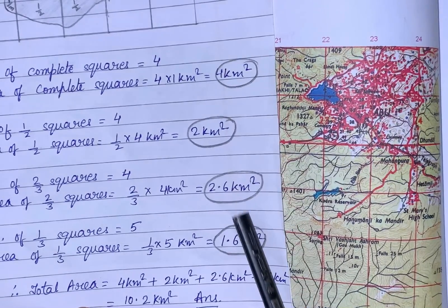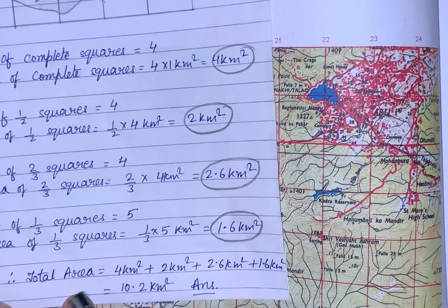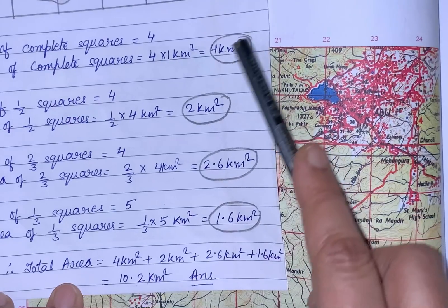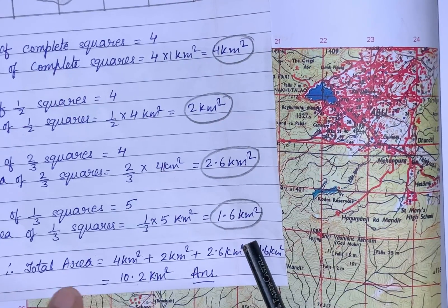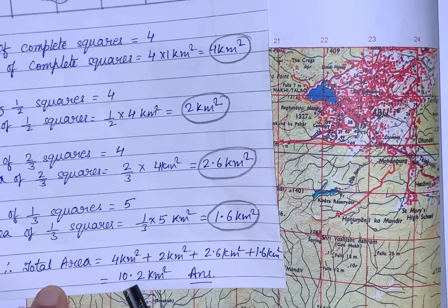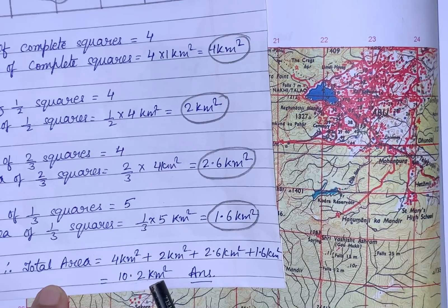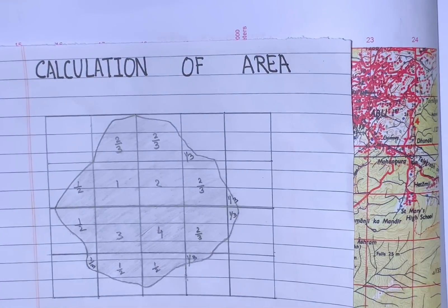I have circled all this to make it clear. For the total area, we will add all these four areas. After adding, we get 10.2 kilometers square. This will be your answer.